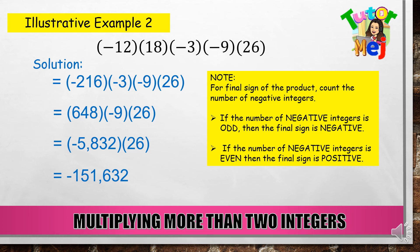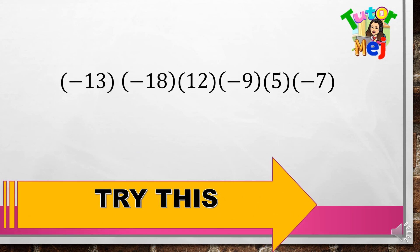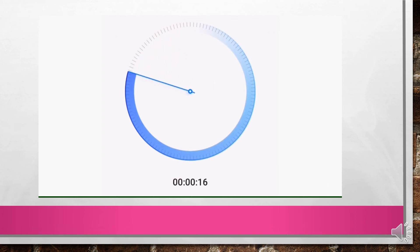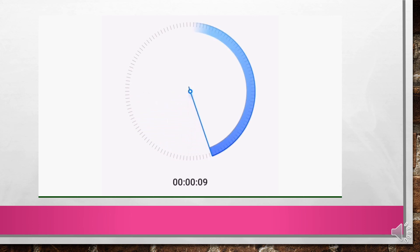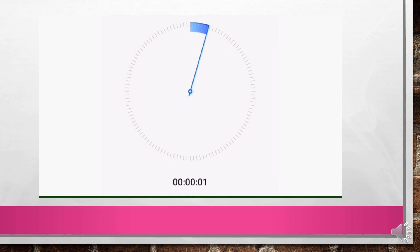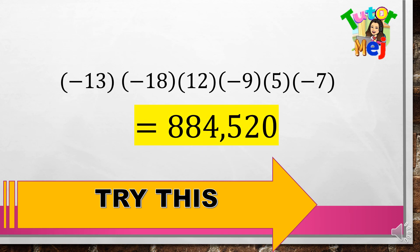Sige, subukan natin ang iyong pagkatuto — try this! Negative 13 times negative 18 times positive 12 times negative 9 times positive 5 times negative 7. Timer starts now! ... Ang sagot ay positive 884,520. Nakuha mo ba? Congratulations! Hanggang sa muli!